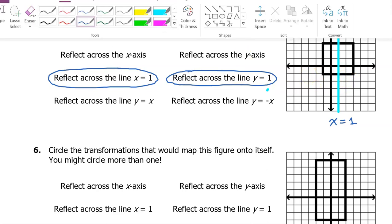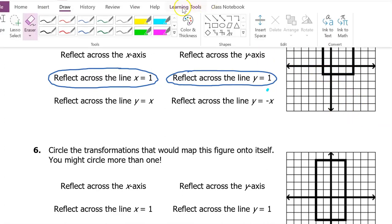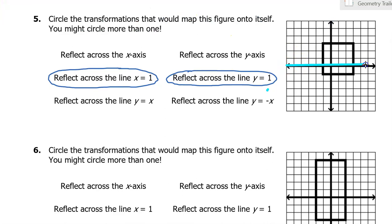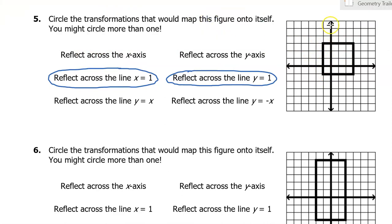What about the X axis and the Y axis? Let's look at the X axis first. Does that split the square right down the middle? Are these sides mirror images of each other? No — there's much more square above and much less below. So reflecting over the X axis will not map the figure back onto itself. Same problem with the Y axis — this image is not the same on the left and the right, so we will not circle that.